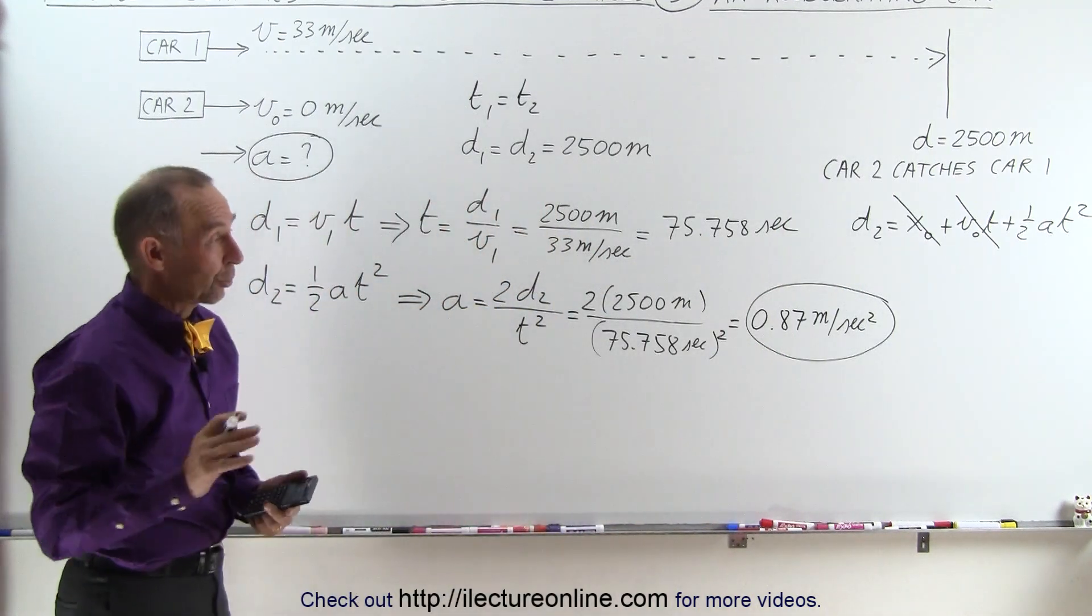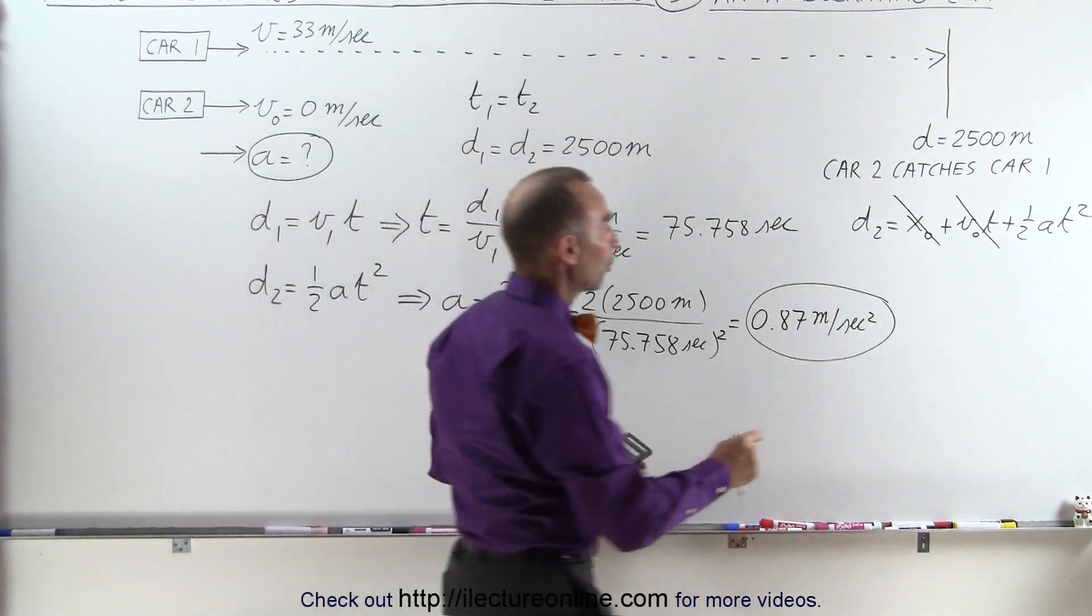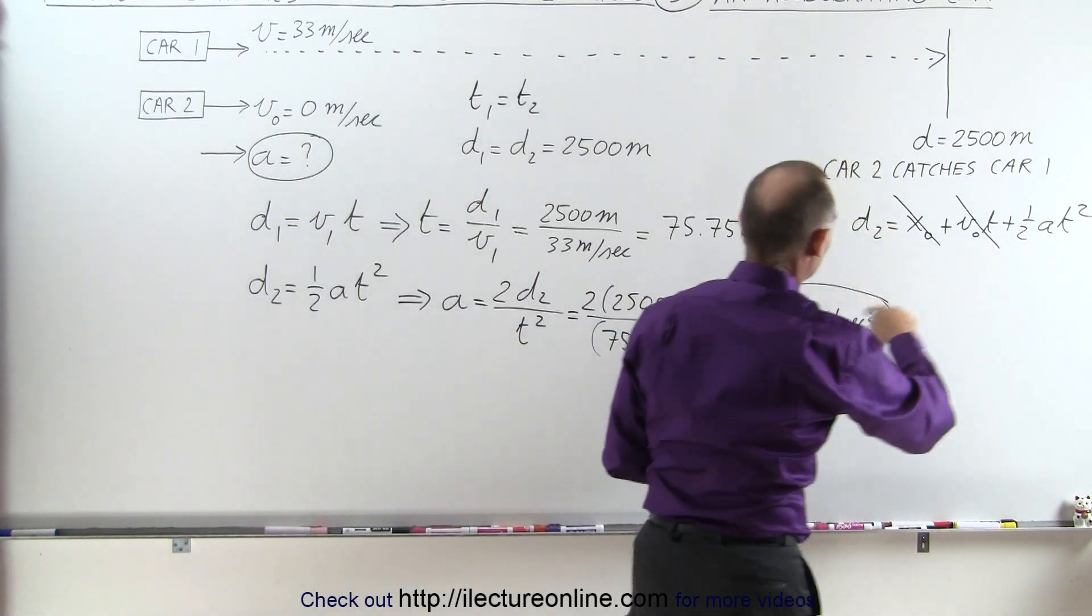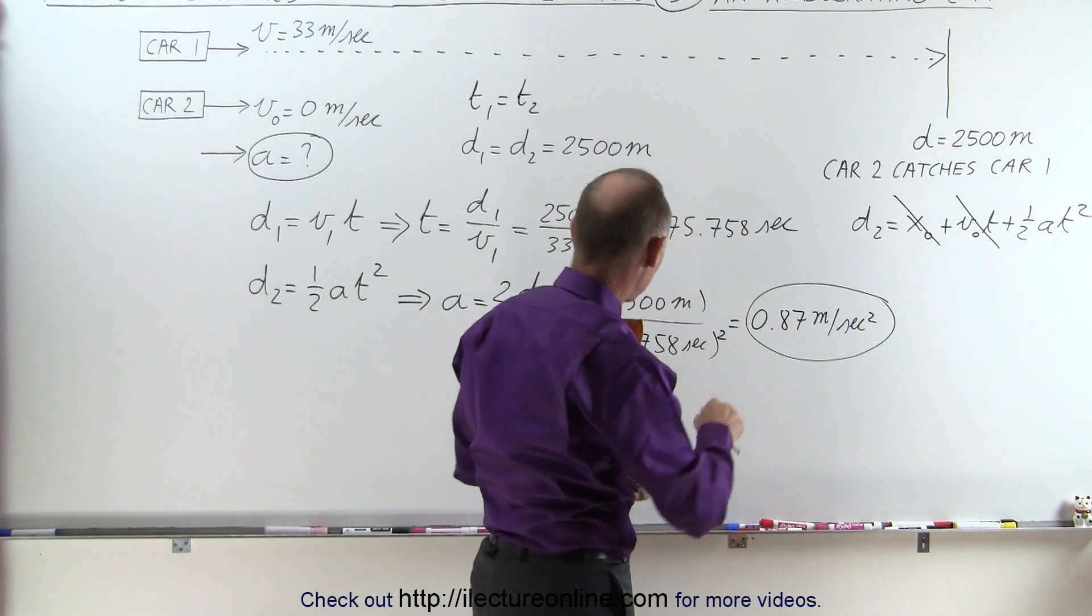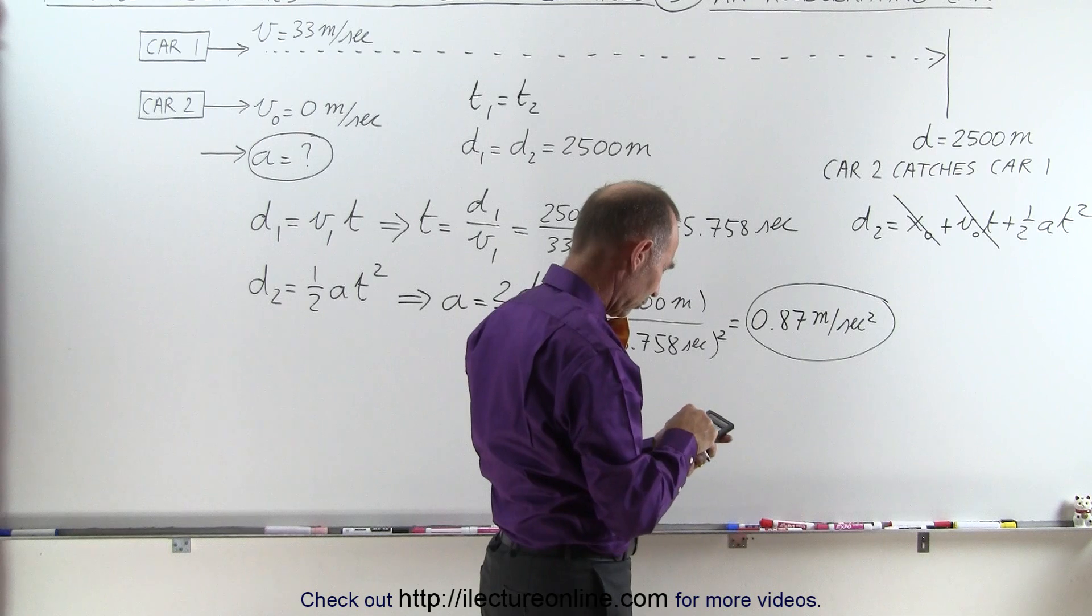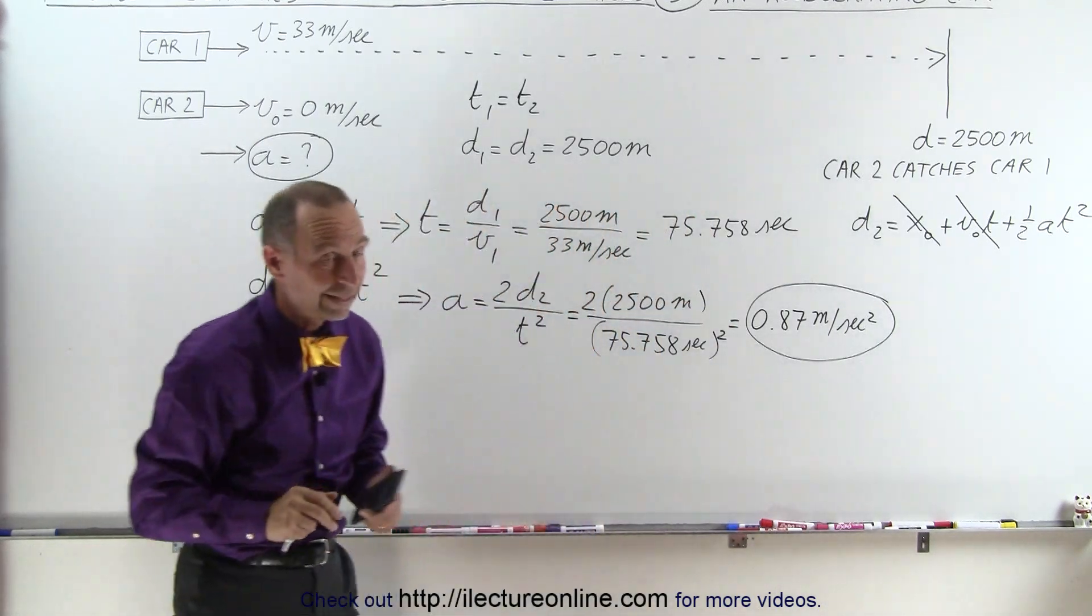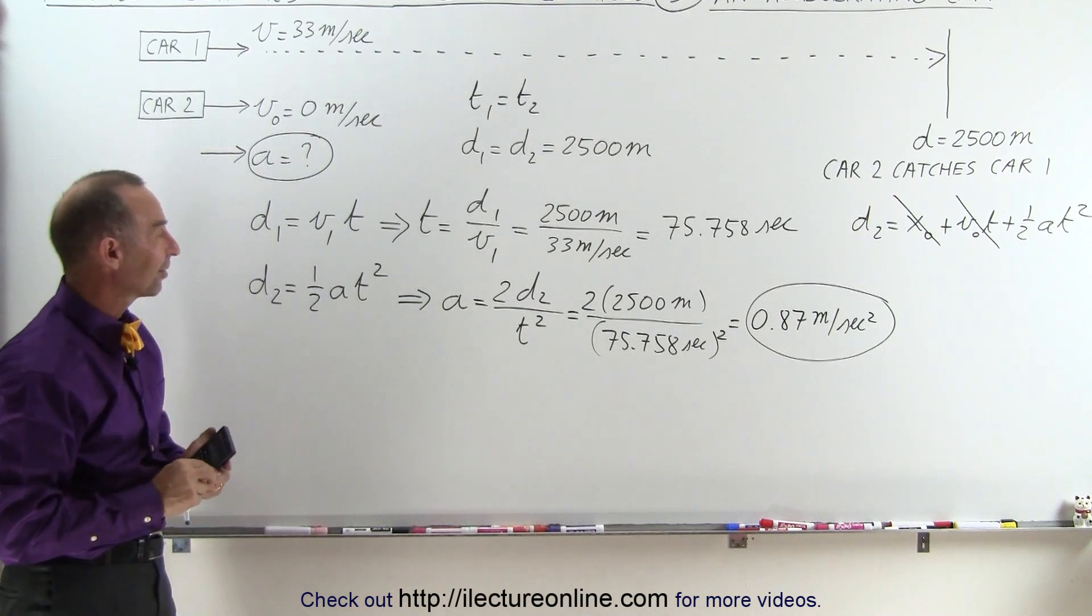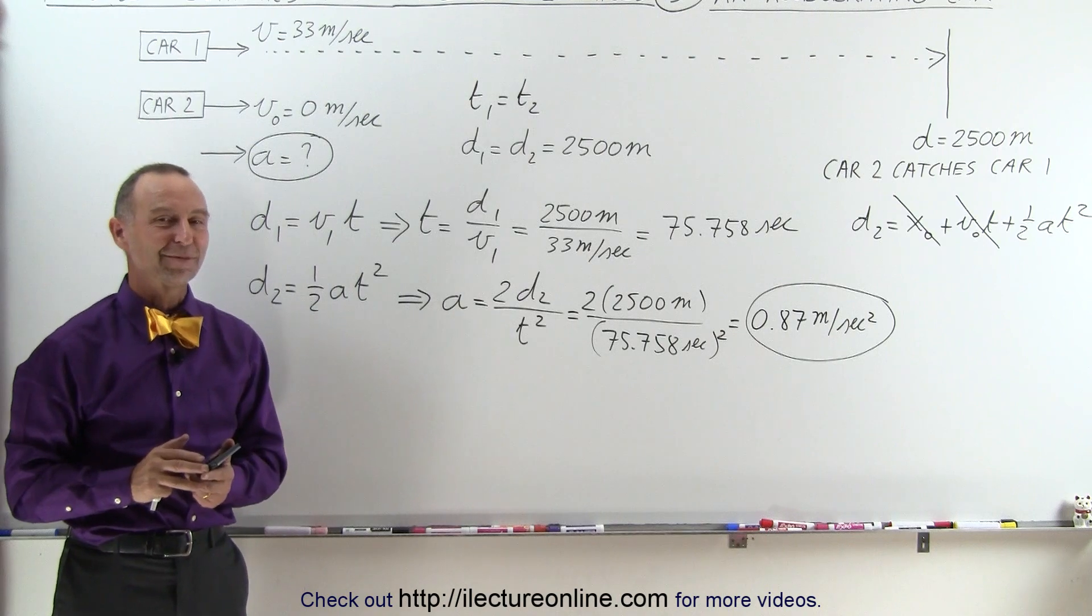And just to make sure we get that correct, let's plug that into our equation and see if we do indeed get the distance of 2500 meters. So we divide this by 2, and we multiply it times the time, 75.758 squared equals, and I do get 2500 meters, so it looks like that is indeed the correct acceleration, which is what we're looking for. And that's how it's done.